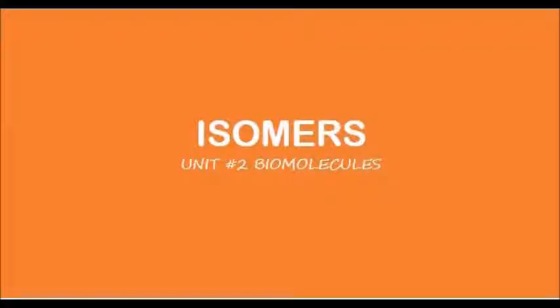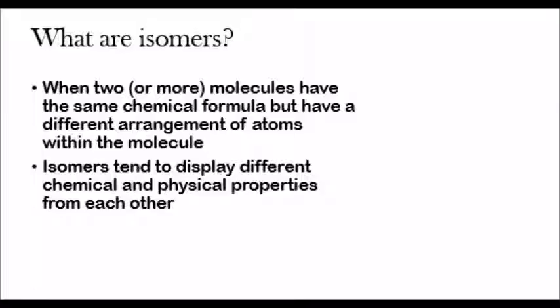Hey guys, my name is Shreyas and welcome to Simple Biology. Today we're going to be talking about isomers. An isomer is when two or more molecules have the same chemical formula but have a different arrangement of atoms within the molecule. Isomers are important in biology because they tend to display different chemical and physical properties from each other. Let's go ahead and look at the first type of isomer.